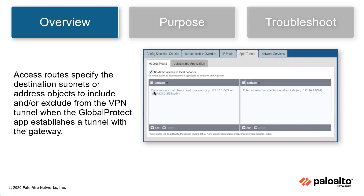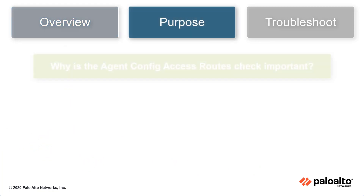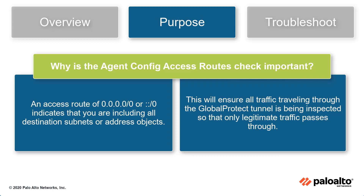Access routes specify the destination subnets or address objects that you want to include in or exclude from the VPN tunnel when the GlobalProtect app establishes a tunnel with the gateway. The GlobalProtect gateway agent config access route best practice check ensures the access route of 0.0.0.0/0 or ::/0 is included in the split tunnel configuration. This indicates that you are including all destination subnets or address objects, ensuring all traffic through the GlobalProtect tunnel is inspected so that only legitimate traffic passes through.